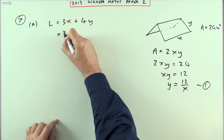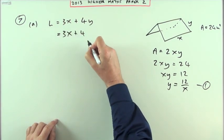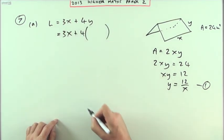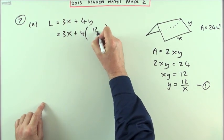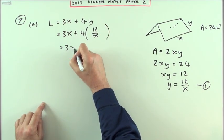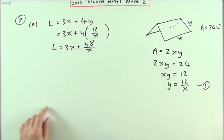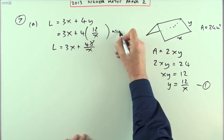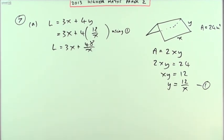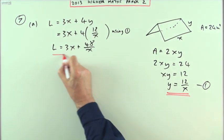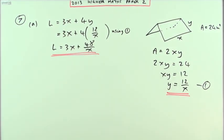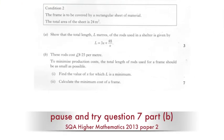So I can use that, I'll call that one. So I can put that up here. So L was 3x plus 4 times but instead of y I write 12 upon x. So I've got 3x plus 48 upon x for the first part. I was using 1.